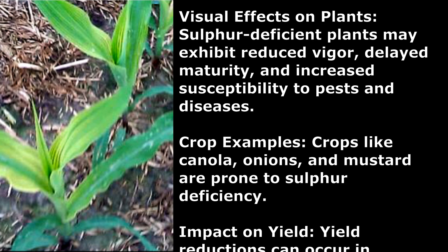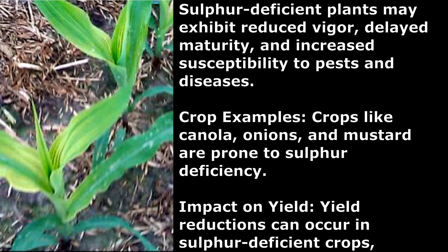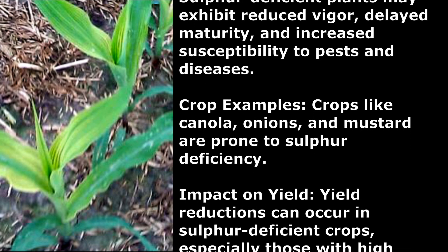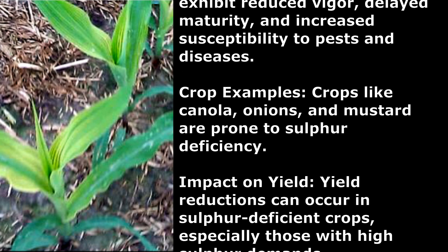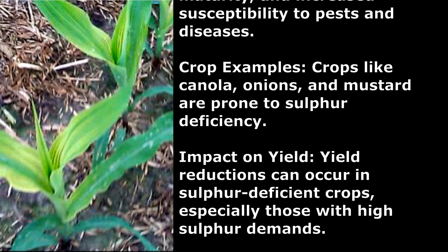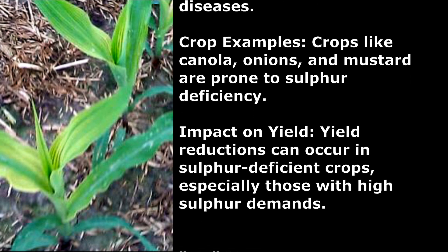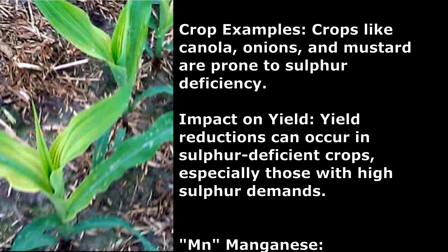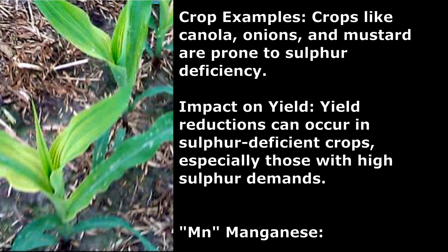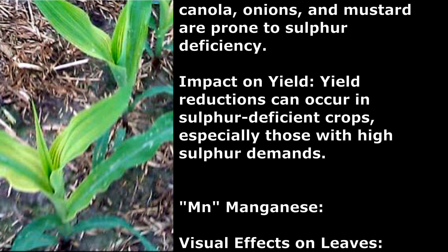Crop Examples: Crops like canola, onions, and mustard are prone to sulfur deficiency. Impact on Yield: Yield reductions can occur in sulfur-deficient crops, especially those with high sulfur demands.